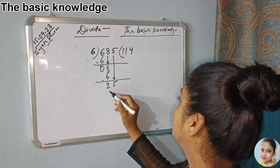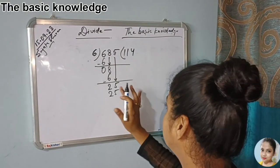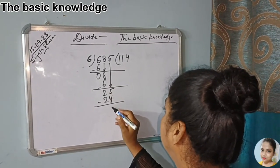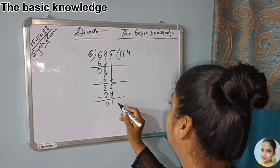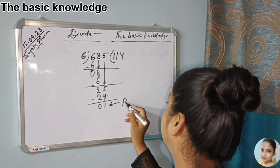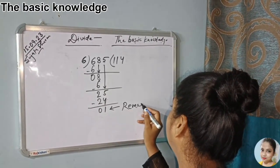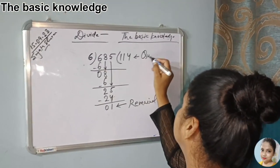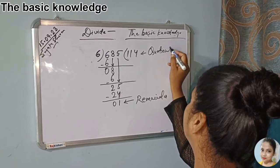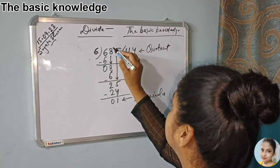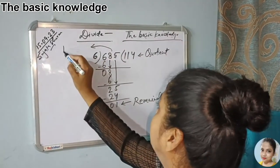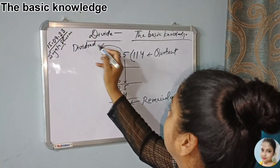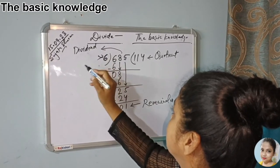So we get 24 — sorry, the remainder is 1. Now this result is called the remainder, this is called the quotient, and this is called the dividend.